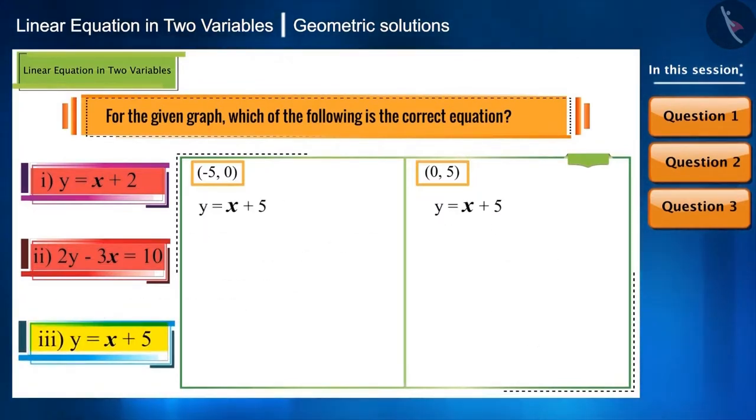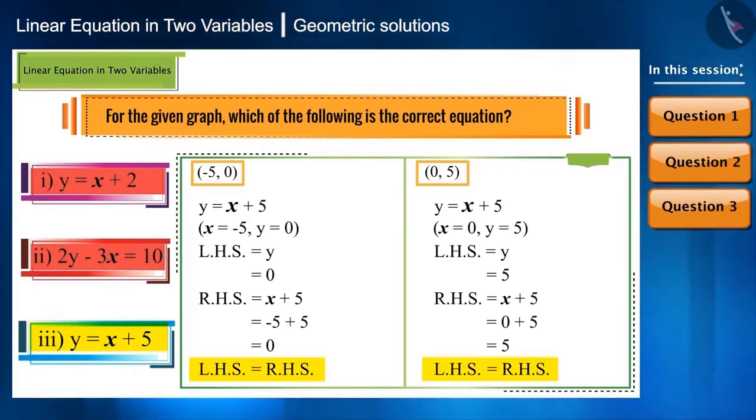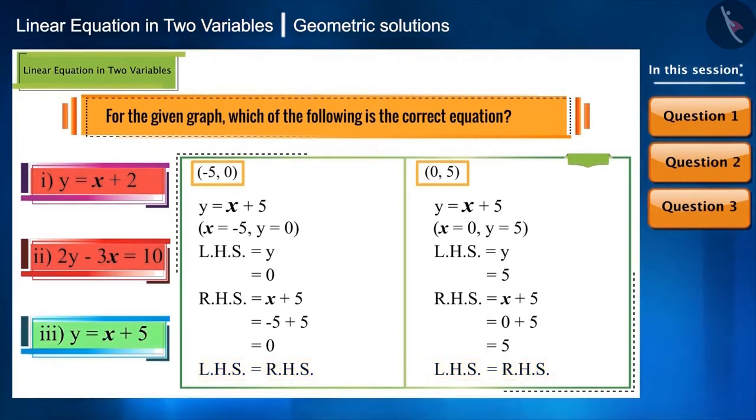Now, let's substitute these values in equation 3. We get the LHS equal to the RHS for both the coordinates. Therefore, equation 3 is the equation of this graph.